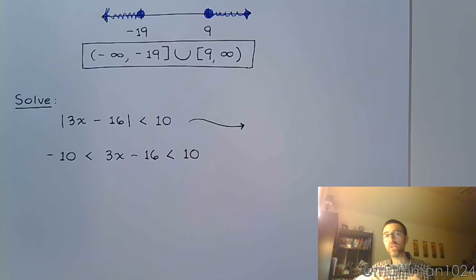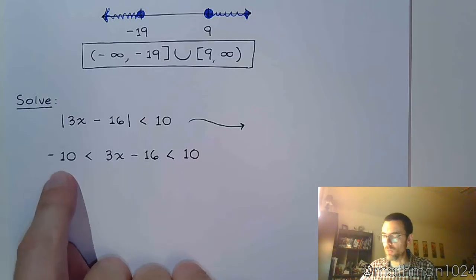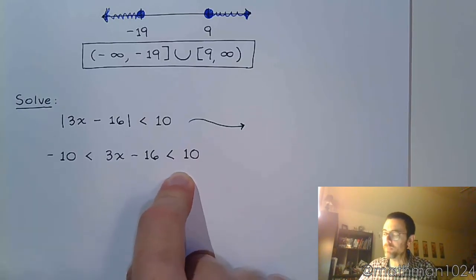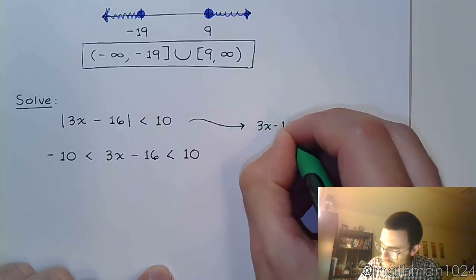Now, you could take this guy and separate this into two separate inequalities. The reason I don't do this is because I want us to understand that by creating a restriction, you've got one section of the number line you're talking about, and with one section of the number line we only need to have one string of inequalities like this.